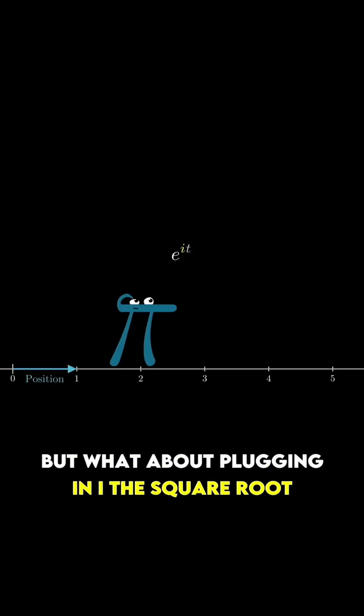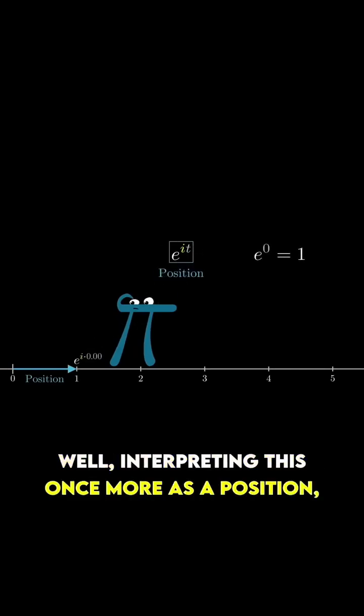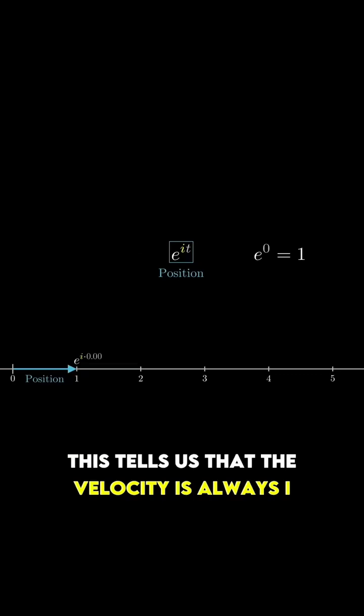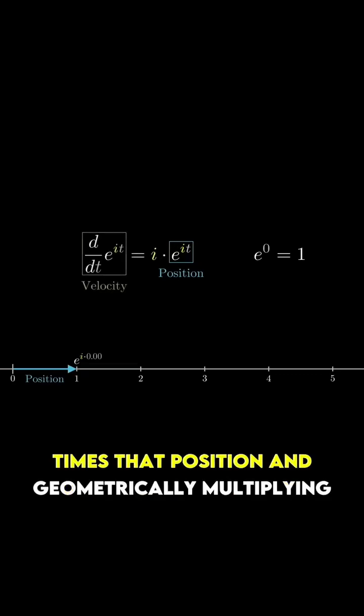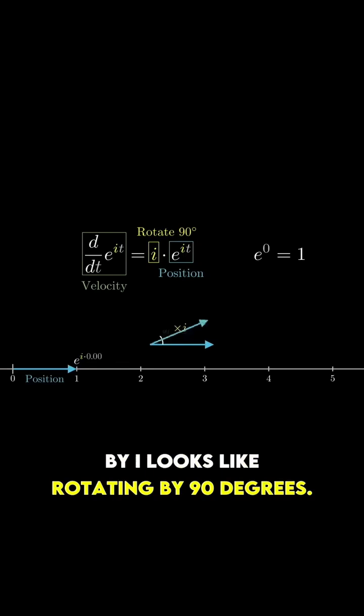But what about plugging in i, the square root of negative one? Well, interpreting this once more as a position, this tells us that the velocity is always i times that position, and geometrically, multiplying by i looks like rotating by 90 degrees.